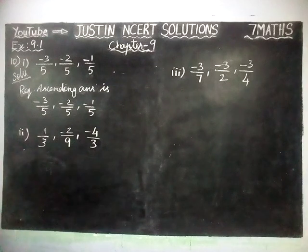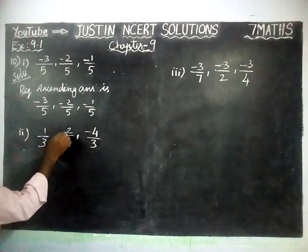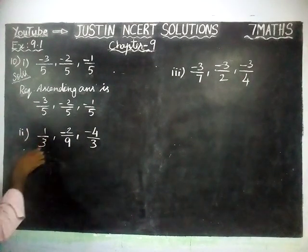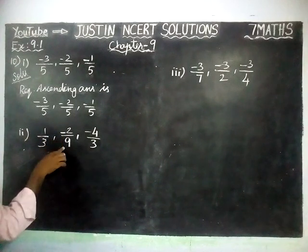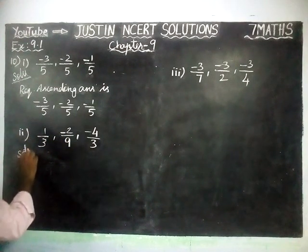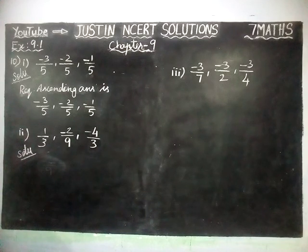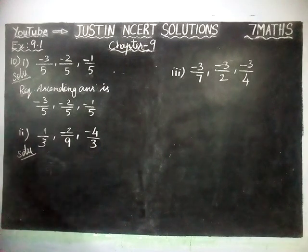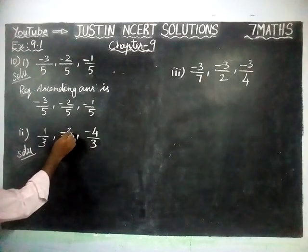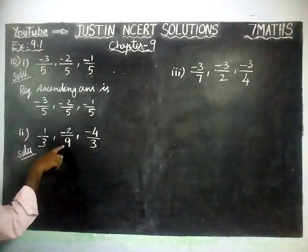Next, the second part: minus 1 by 3, 1 by 3, minus 2 by 9, minus 4 by 3. Here, the denominators are not the same, so firstly we have to convert them into equal denominators. We will check if simplification is possible, but we cannot simplify here.